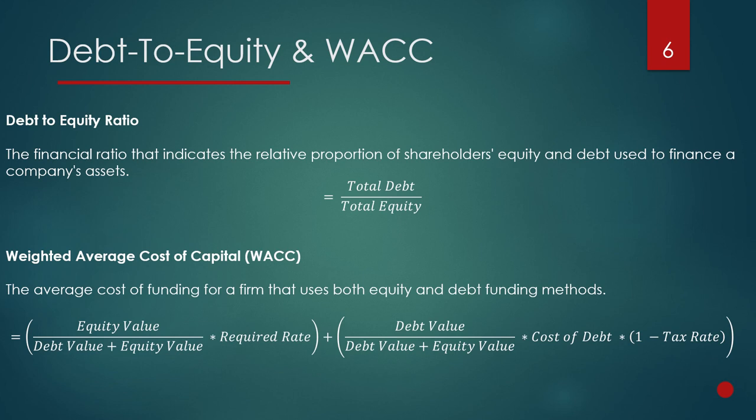The debt-to-equity ratio is basically the relationship between debt and equity used to fund the firm. It's the financial ratio that indicates the relative proportion of shareholders' equity and debt used to finance a company's assets, and it's calculated by dividing the total debt by the total equity.